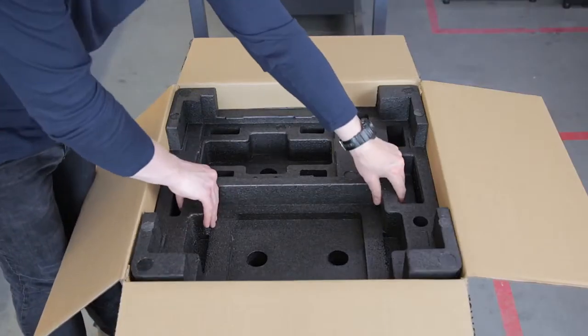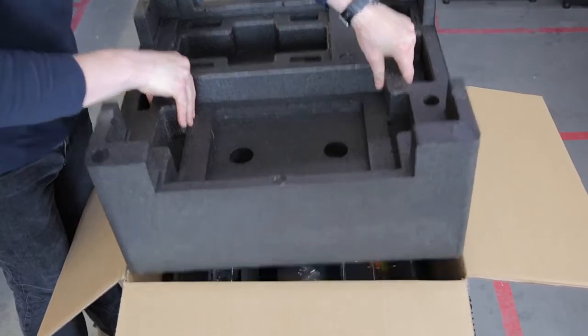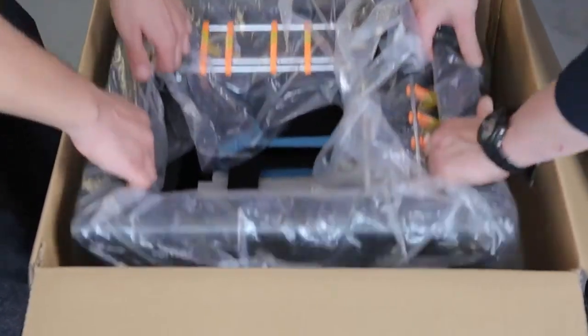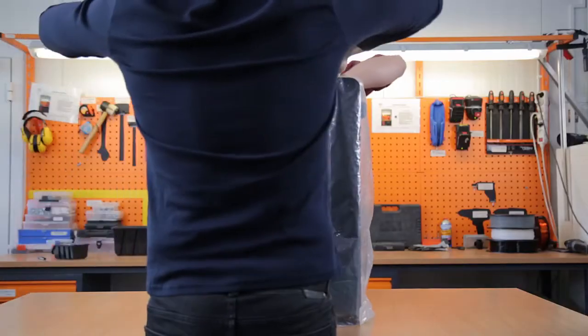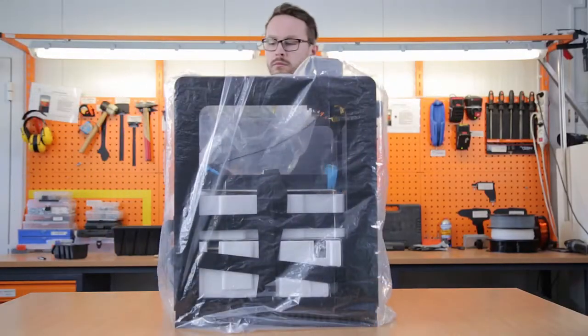After removing the upper cushioning, you'll be able to take out the device. Be careful when you grab the printer, and ideally, you should ask someone for assistance when dealing with heavy lifting. Place the 3D printer on a flat and stable surface and remove the foil.